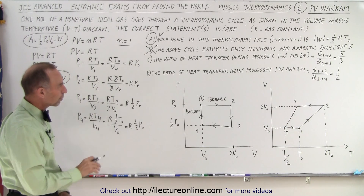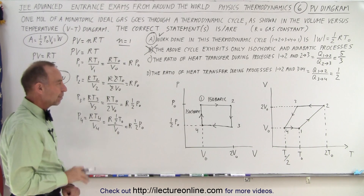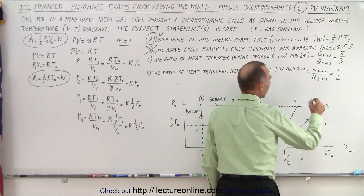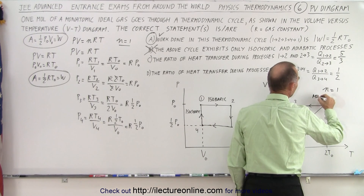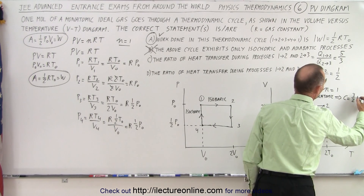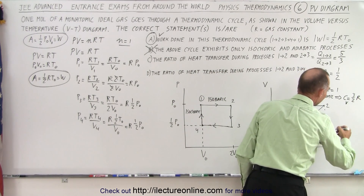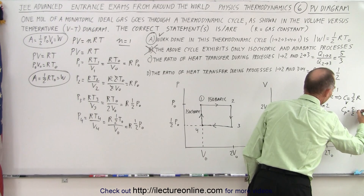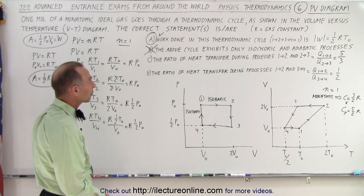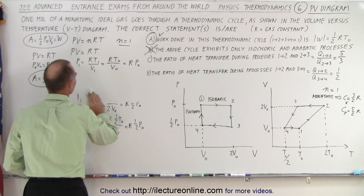Statement C asks whether the ratio of heat transfer during process one to two and process two to three is five to three. Before answering, note that for a monatomic ideal gas with n = 1, Cᵥ = 3/2 R and Cₚ = 5/2 R. Knowing that, let's work out the heat for each process.